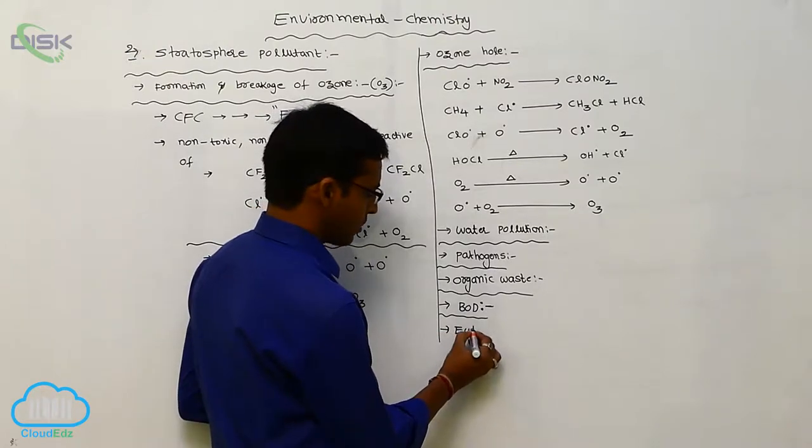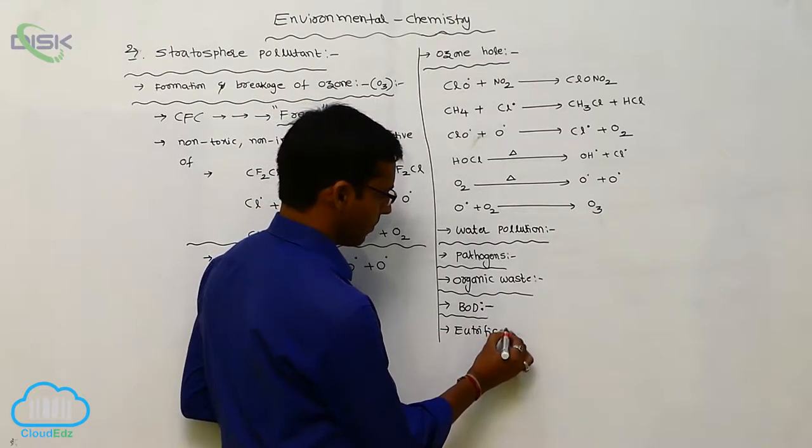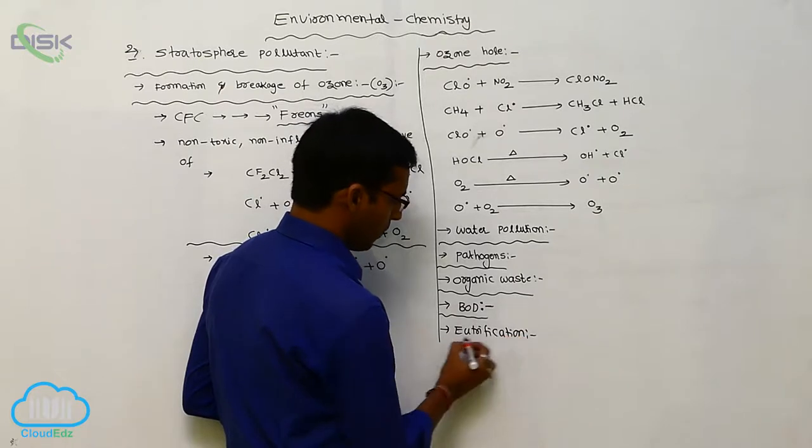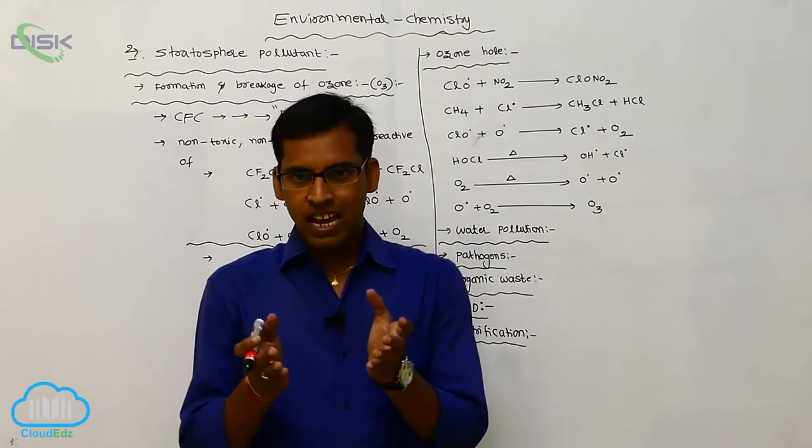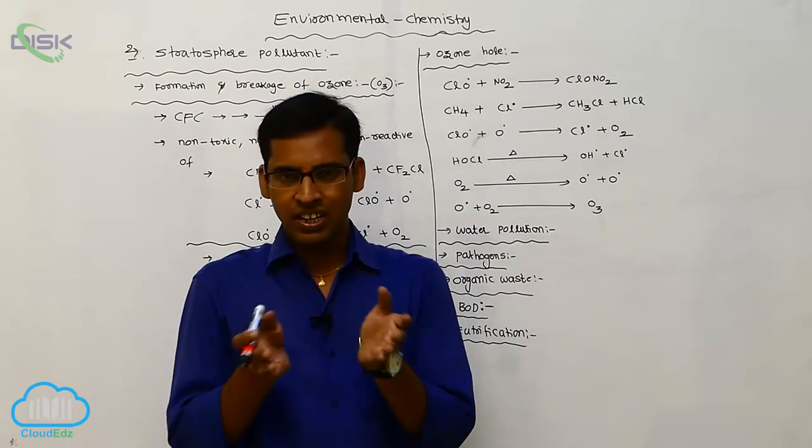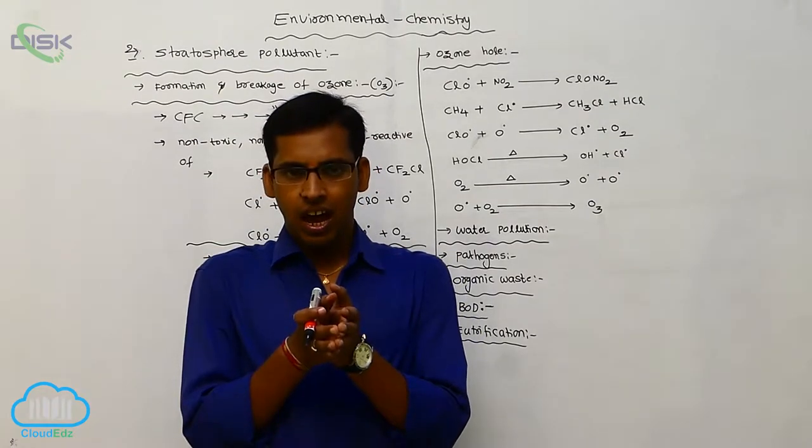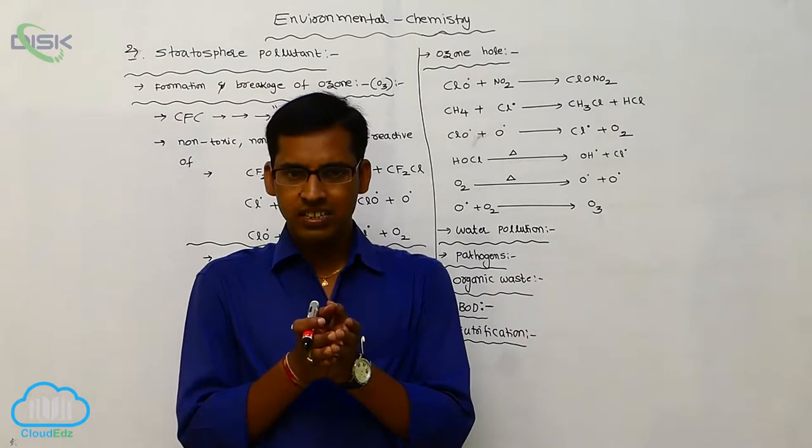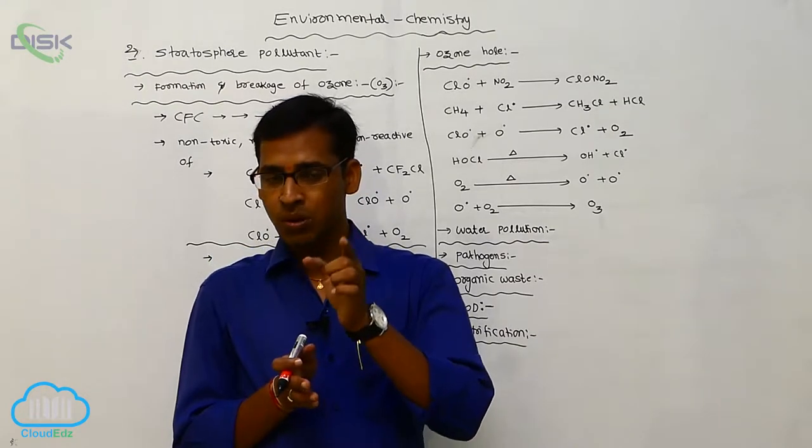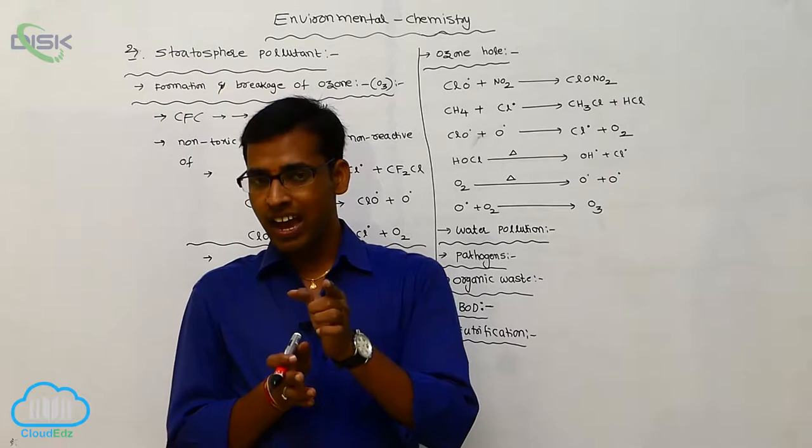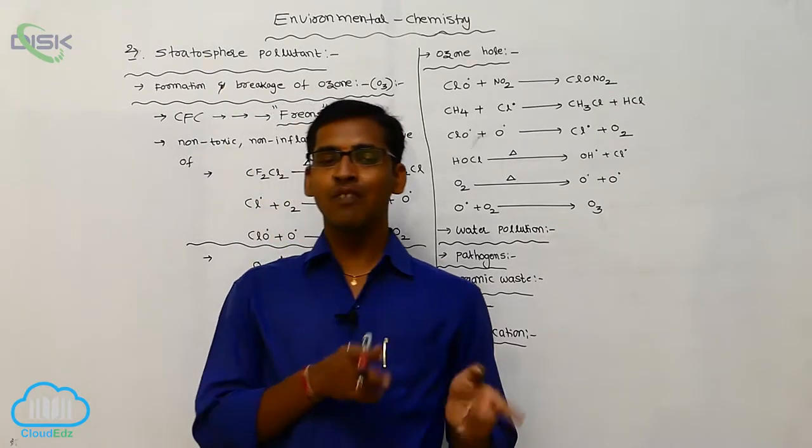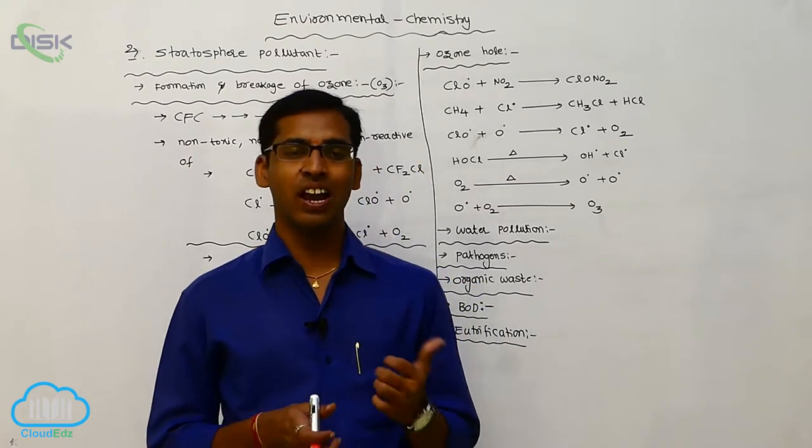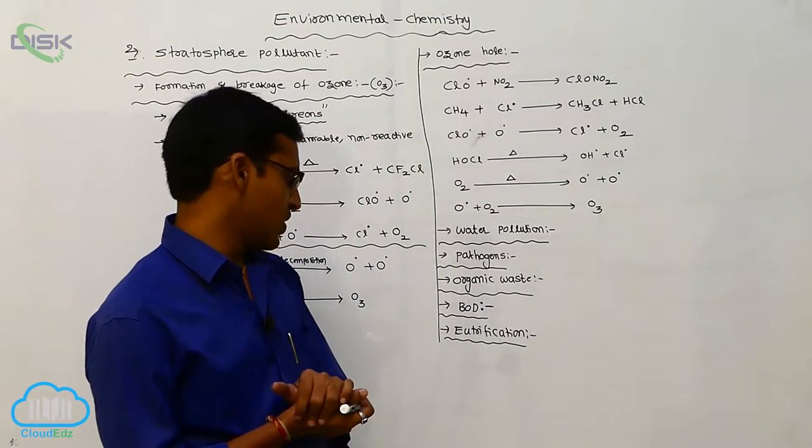It is called eutrophication. Eutrophication means the substance having more nutrients or enriched nutrients are present. Those enriched nutrients are suitable for the growth of plants and killing of animals. The loss of biodiversity is called the eutrophication process.